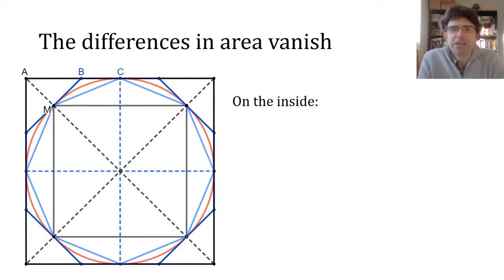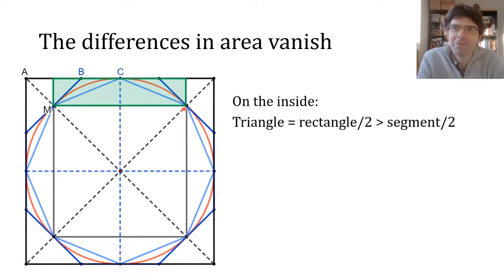Each of the segments outside the inner square, when we move to octagons, it gets a triangle in it. And that triangle is half of the area of a rectangle formed by the base of the triangle and a little bit of tangent opposite it. And that rectangle is clearly bigger than the segment of the circle. So in other words, if the triangle is half the rectangle, it's more than half of the segment.